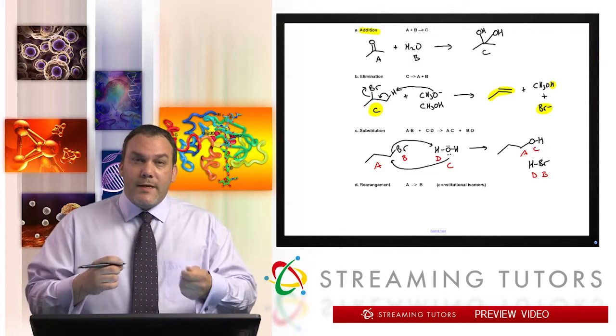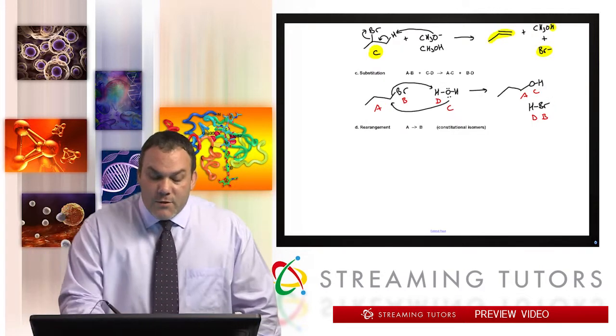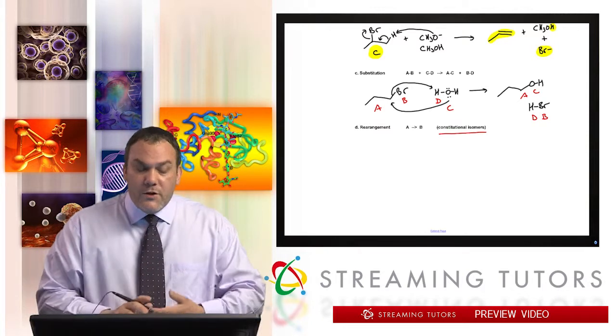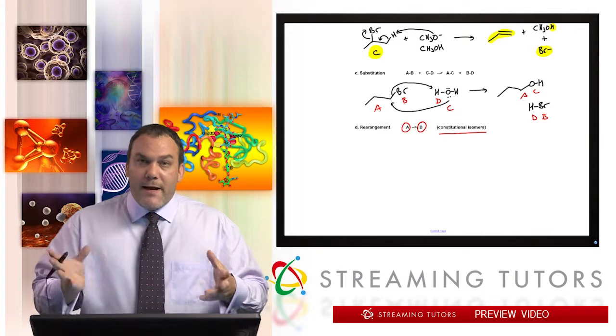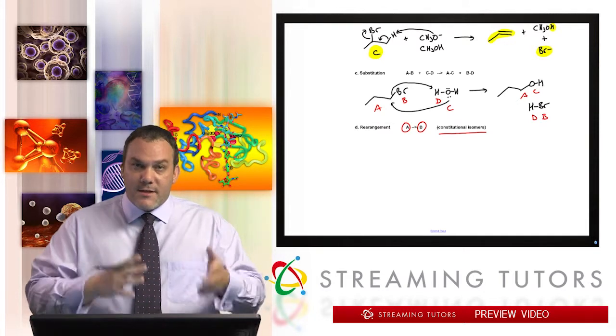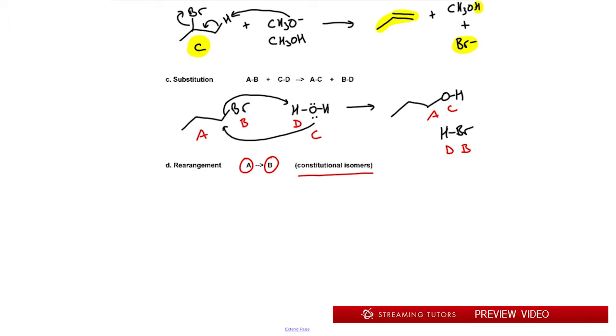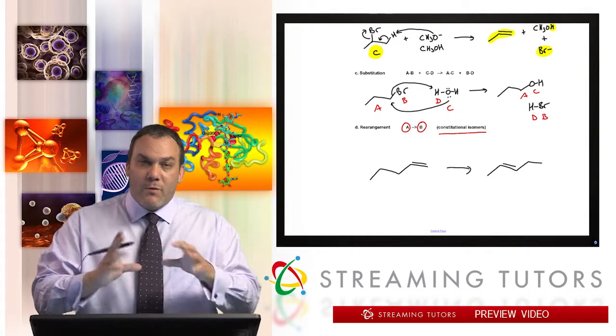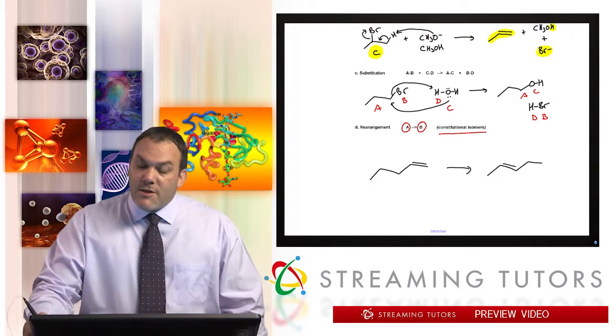The final type is known as rearrangement, also known as constitutional isomer. We're going to change something within the molecule, but it's the same molecule. A just becomes B. We're just going to modify A and make it into something different B, but it's the same number of atoms, the same formula. For example, if we have a system with a double bond on the end and somehow at the end we make a system where the double bond's in the middle somewhere, we rearranged the double bond's location.